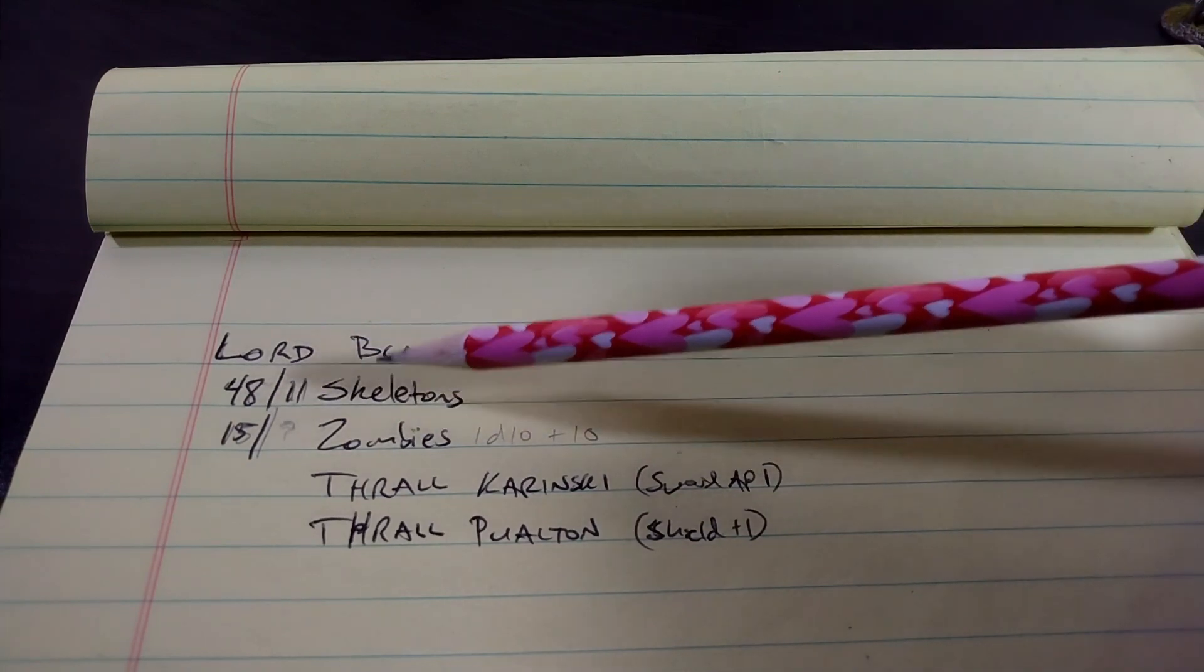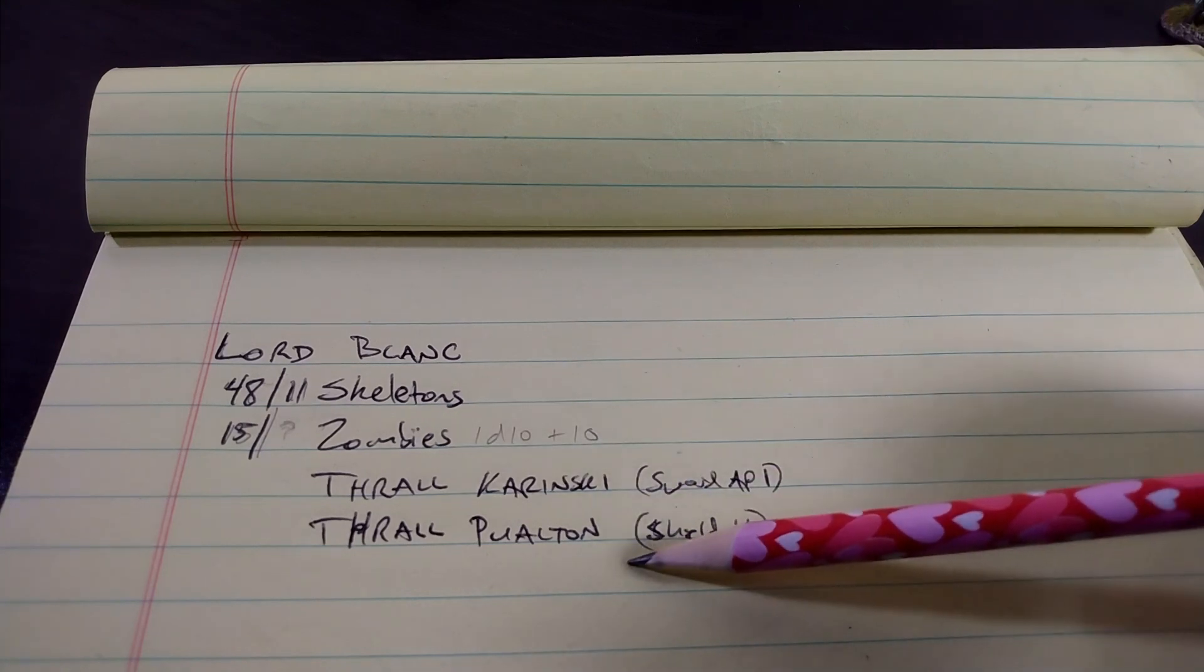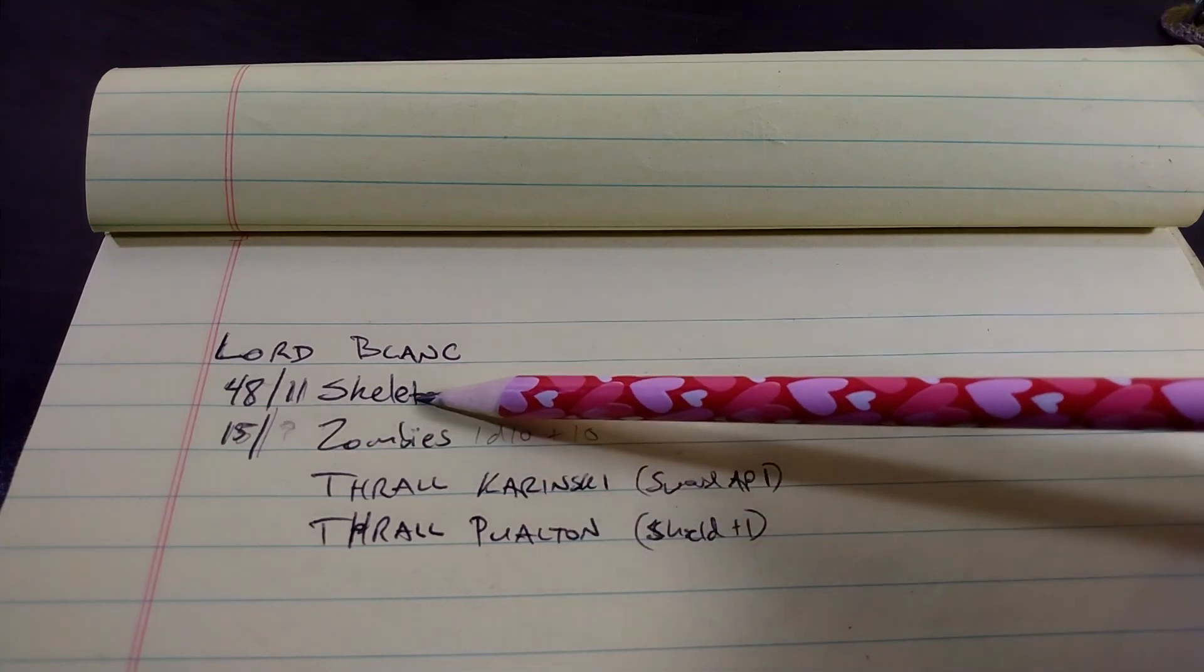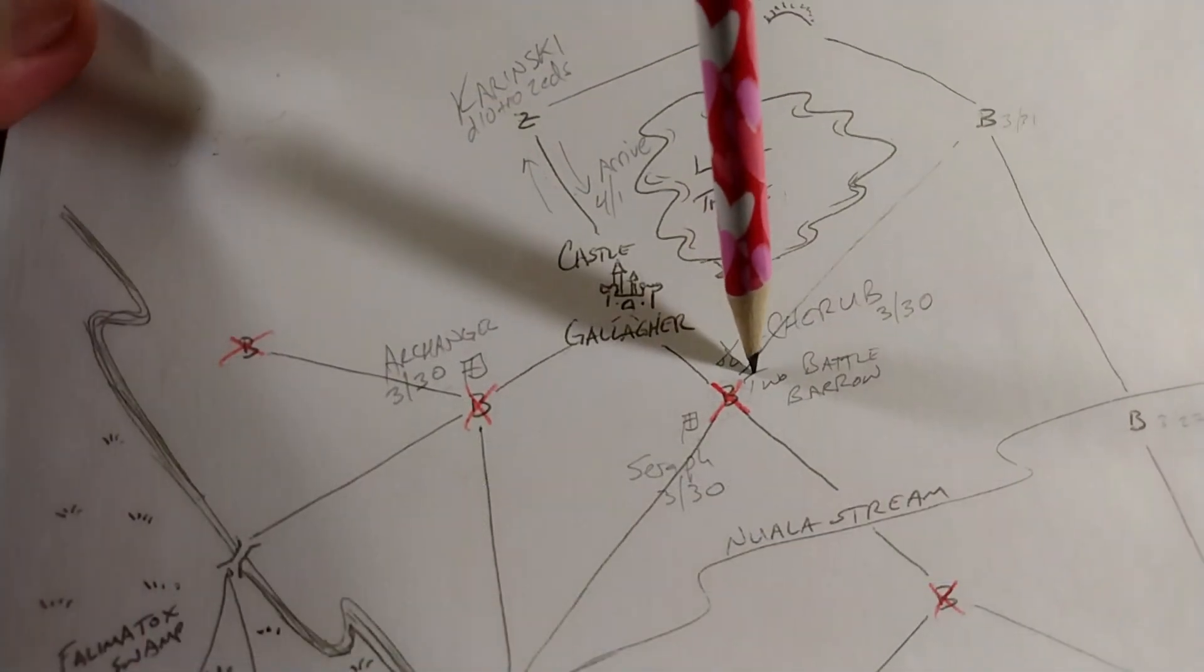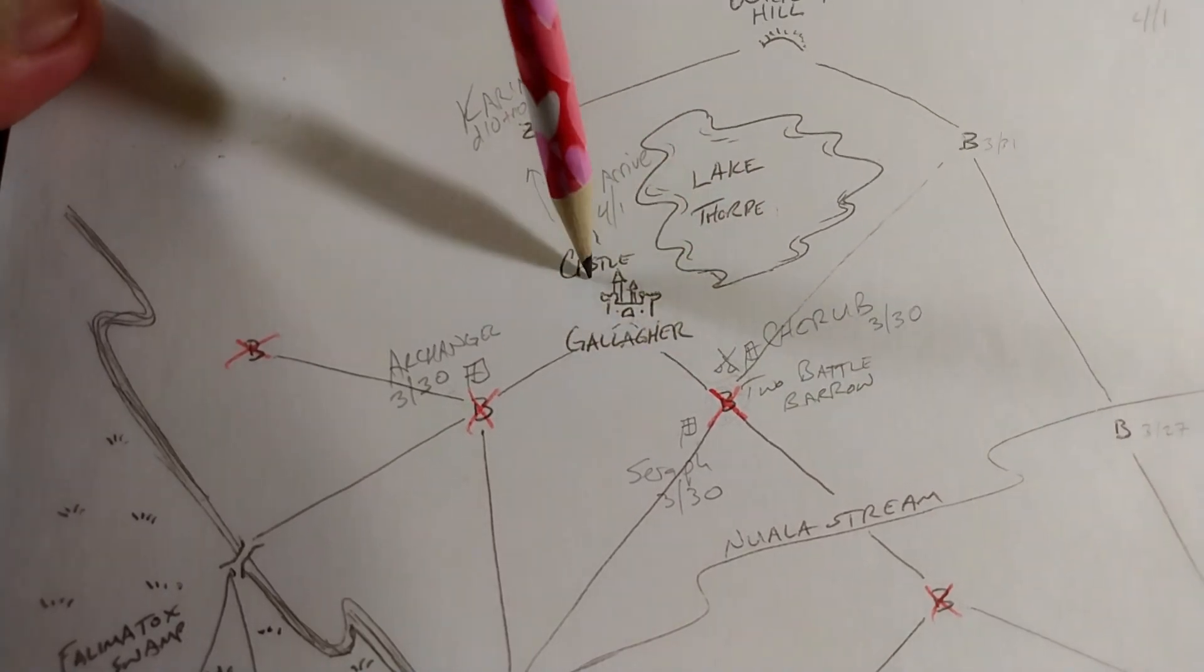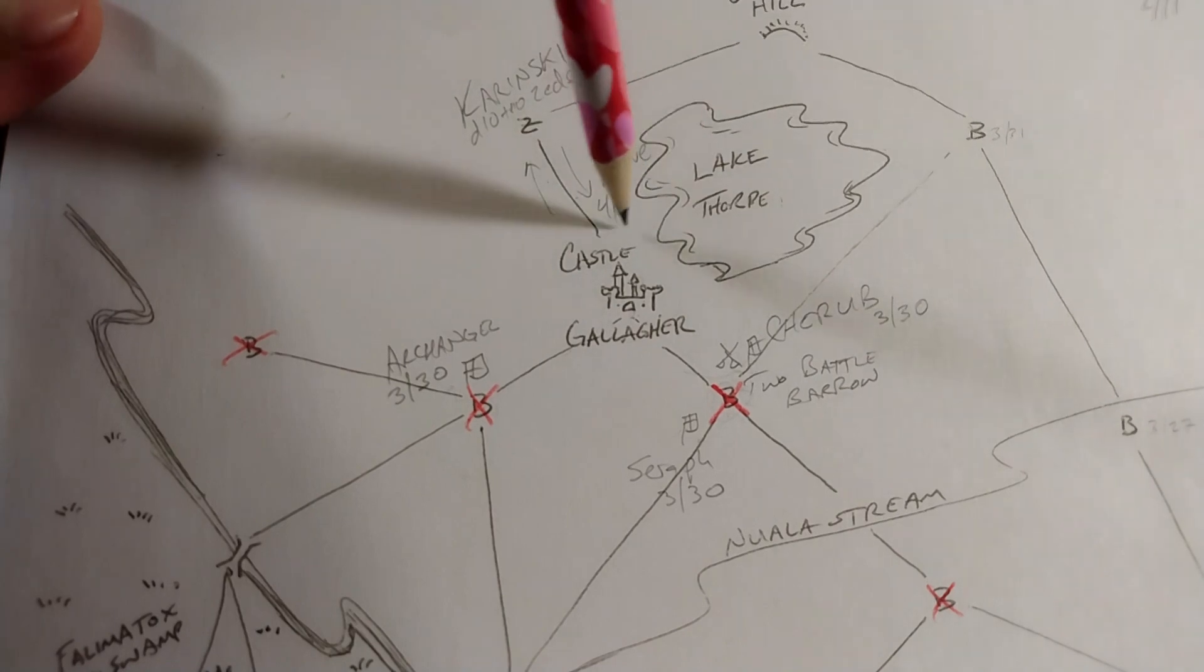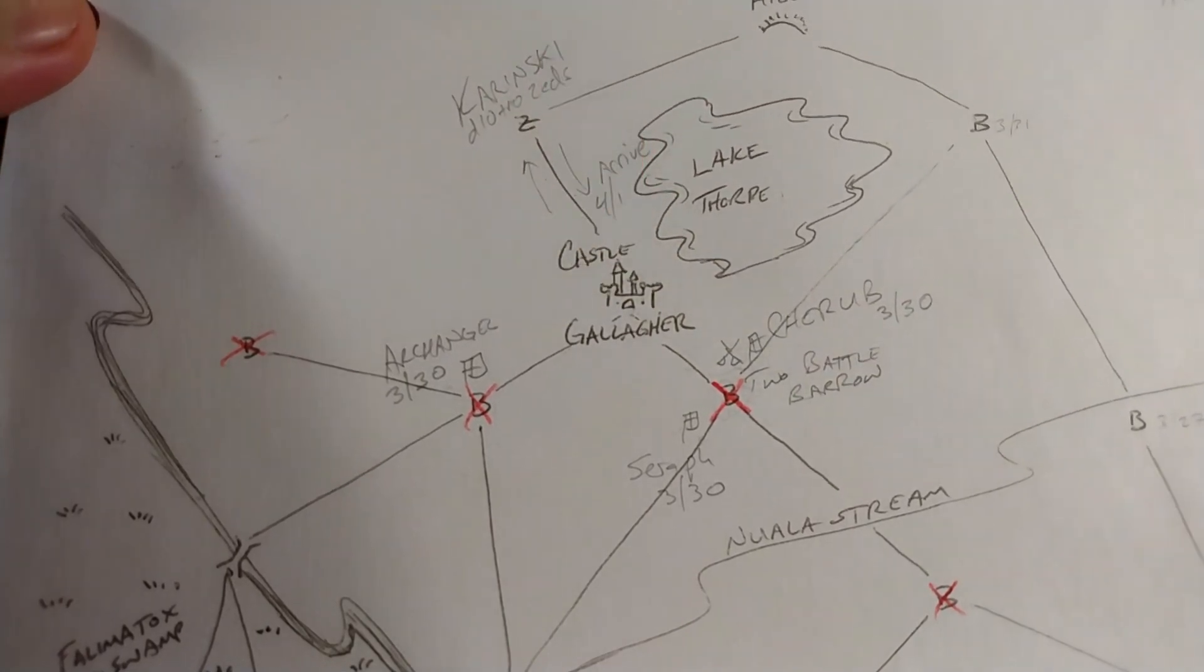You'll notice here that I've got a little stroke mark here between the 48 and 11. That's a total of 59 skeletons. Remember in the battle how Thrall Pualton, Dane Pualton, was able to run away and drag a whole bunch of skeletons with him. Well, that looks like this on the map. This is where the battle was fought. And remember that Dane ran across country to this road and blitzed up to Castle Gallagher. He's going to be able to make it there in plenty of time. He'll be there on the 28th.